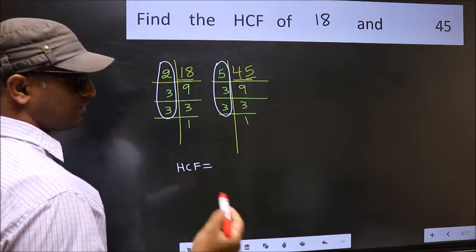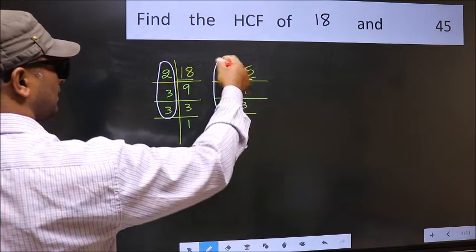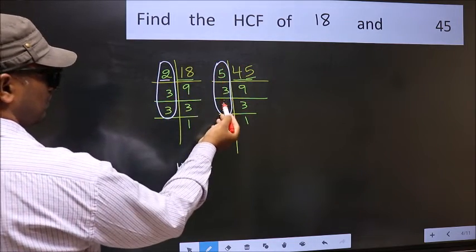So now let us find the numbers which should be present here and here. Starting with the number 2. Do we have 2 here? No.